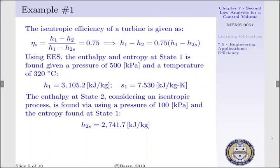Now, our enthalpy at state 2, considering an isentropic process, is found using a pressure of 100 kPa and the entropy found via state 1. That is, our enthalpy at state 2S is 2,741.7 kJ per kg.